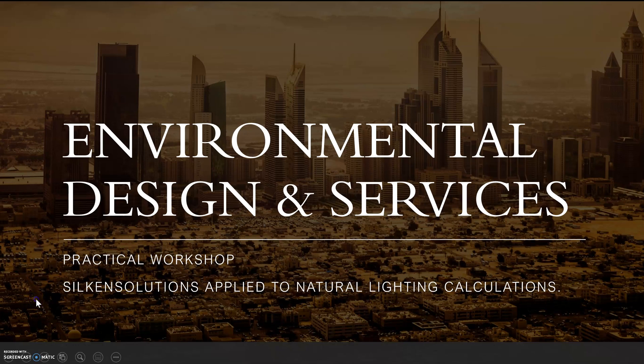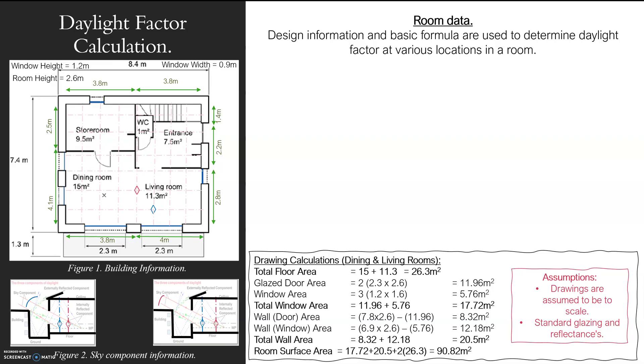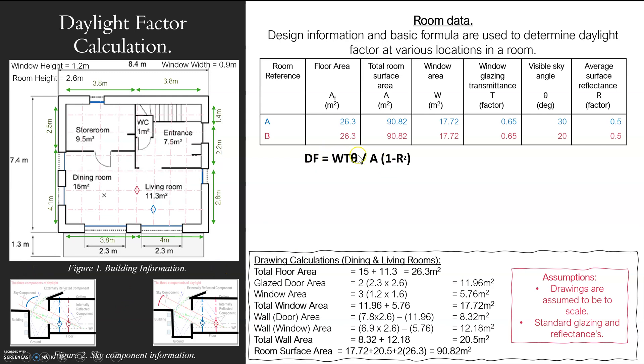Looking at a practical workshop for natural lighting, specifically daylight factor. I've got my plan and section here and I'm starting to gather my room data. The daylight factor calculation requires window area, transmittance, visible angle of sky, area of floor, and reflectances of my surfaces.